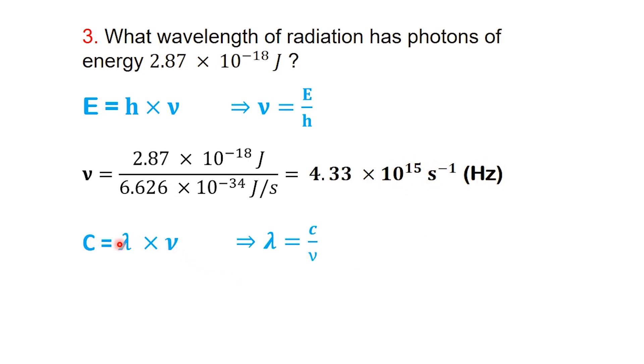Now, we use the equation C equals lambda times nu. Rearranging for lambda gives lambda equals C divided by nu. We take C as exactly 3 times 10 to the 8 meters per second, and divide by 4.33 times 10 to the 15 per second. The per second in the denominator cancels with the per second in C, leaving meters. Doing that division gives about 6.928 times 10 to the minus 8 meters.